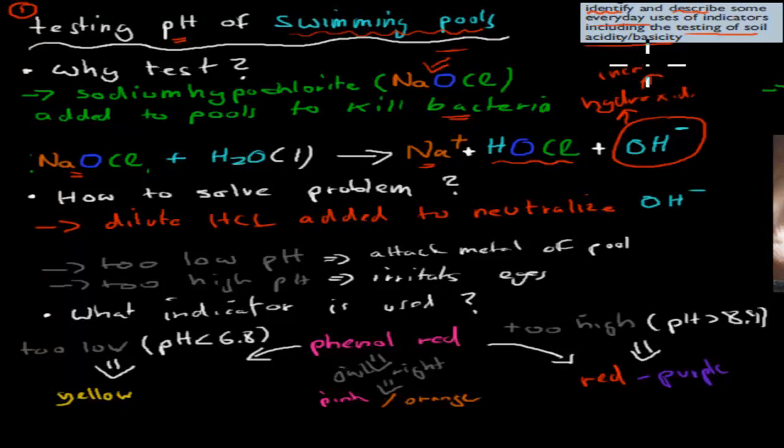So when we're trying to kill these bacteria by putting this sodium hypochlorite into water that will increase the pH, it will make it more basic. It does so because as soon as this hits water, as soon as sodium hypochlorite hits water it will dissociate and release these hydroxide ions which will increase the pH and make it more basic.